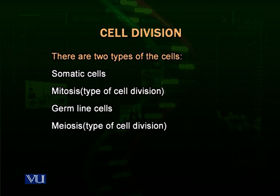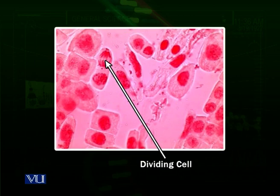We are talking about division in somatic cells first. Somatic cells need to divide for growth, wound healing, regeneration, and other mechanisms. These cells divide by a process called mitosis, while germline cells divide by another process called meiosis. In today's lecture, we are going to talk about mitosis. In the diagram above, you can see a dividing cell.